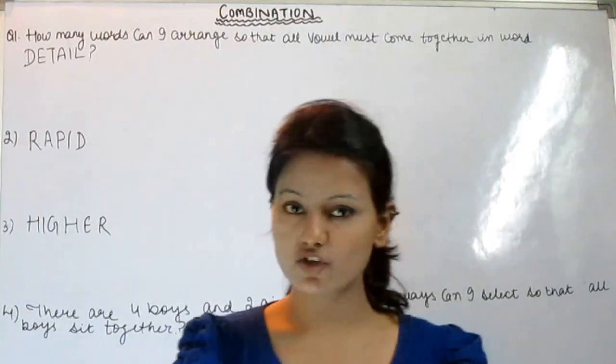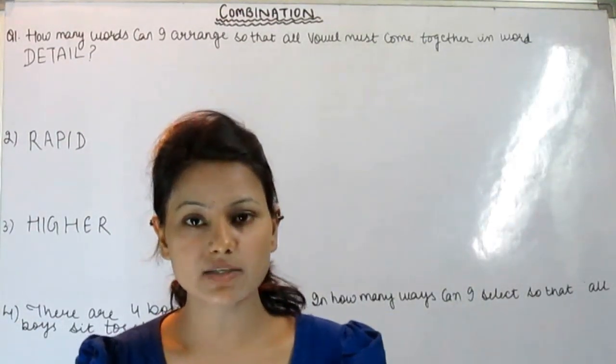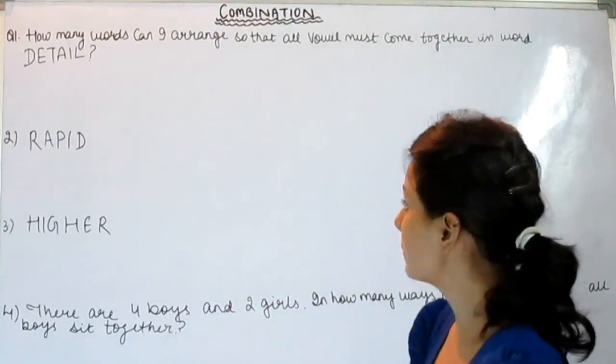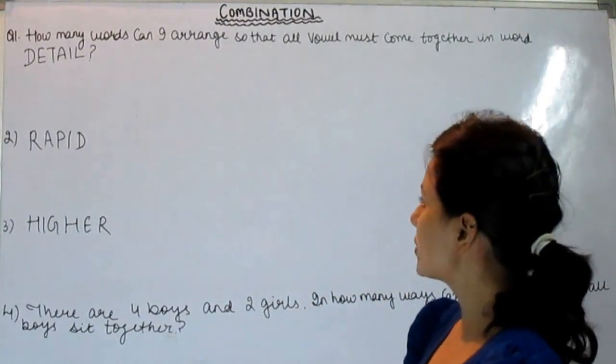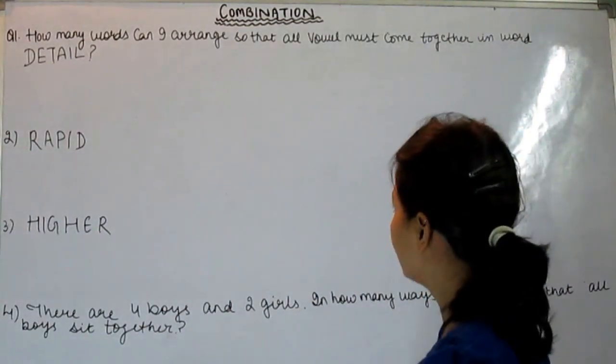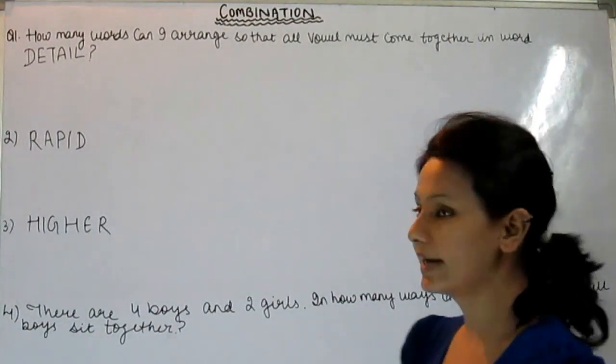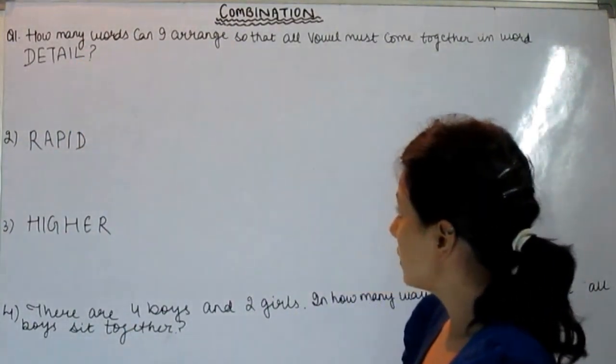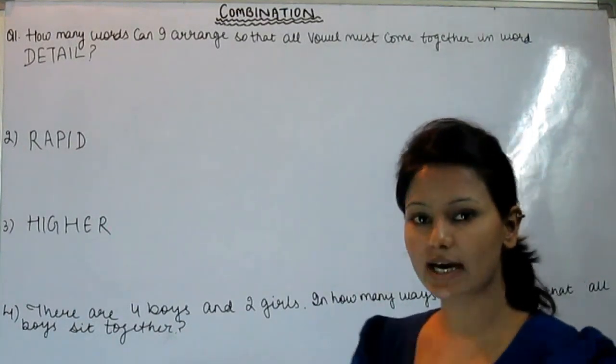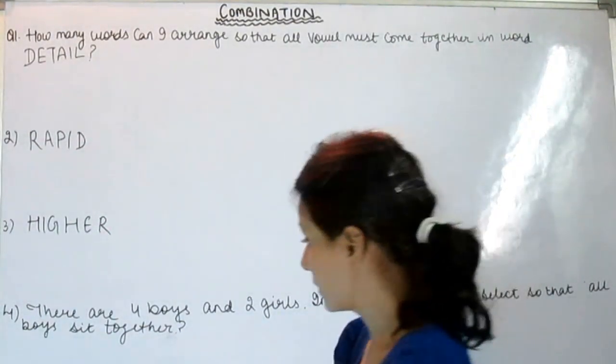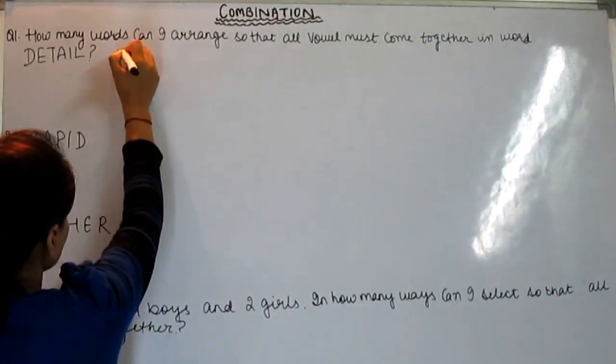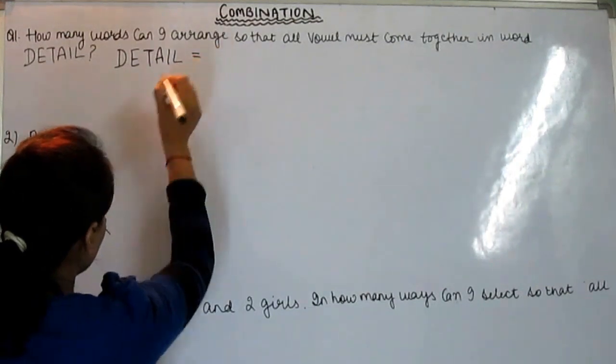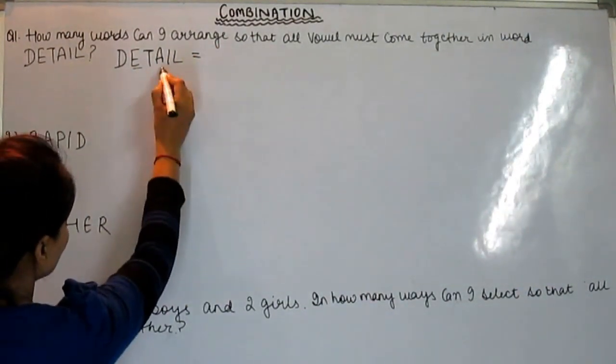Hello friends, welcome to GomilJobsPreparation.com. This is Phidhi and today we will learn the next type of combination. This is a very important type, so learn carefully. The first question is how many ways can I arrange so that all vowels must come together in a word? Detail. One word is detail, we will arrange so that all vowels come together. Detail means how many vowels are there? We have three vowels.